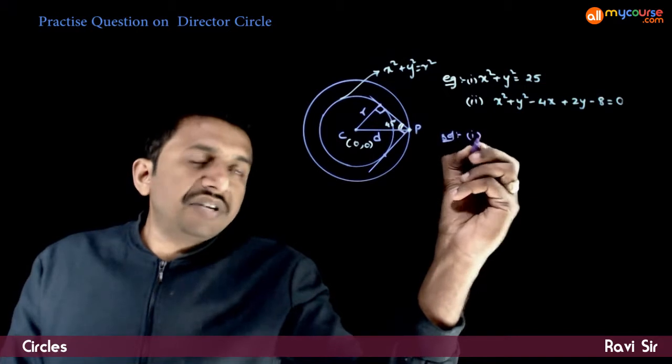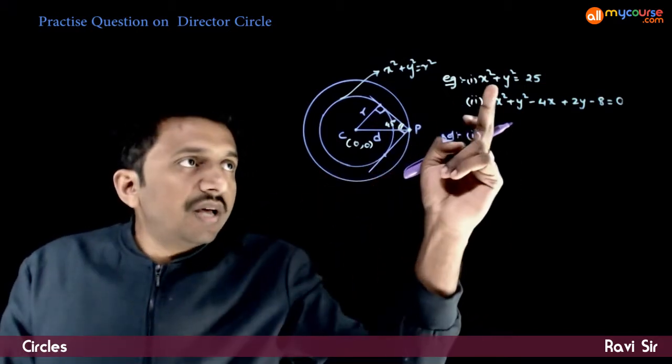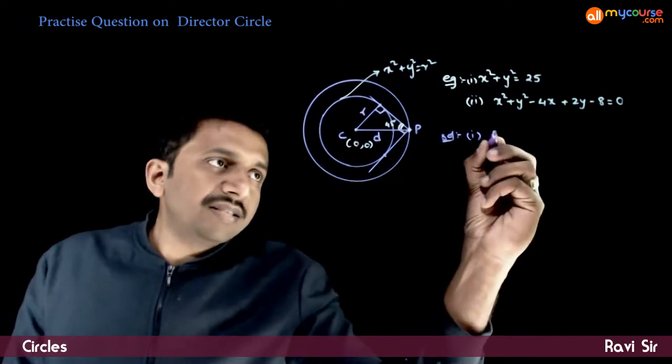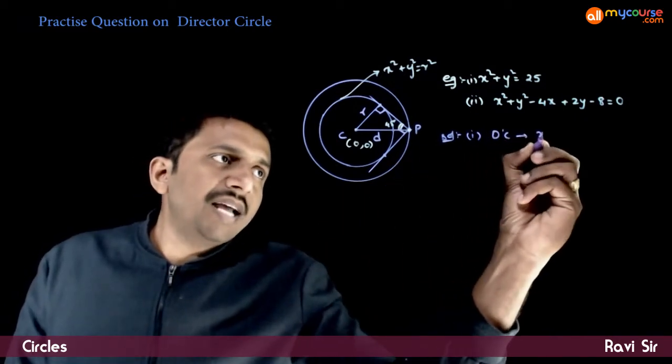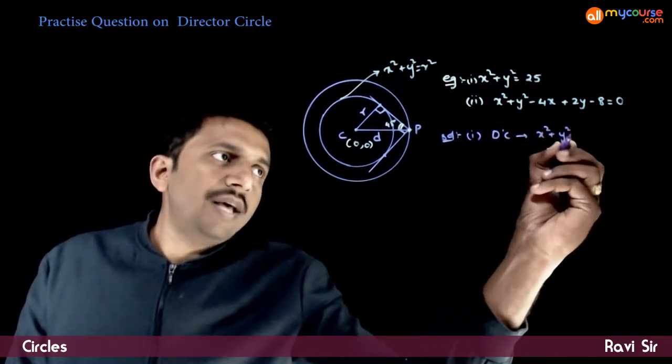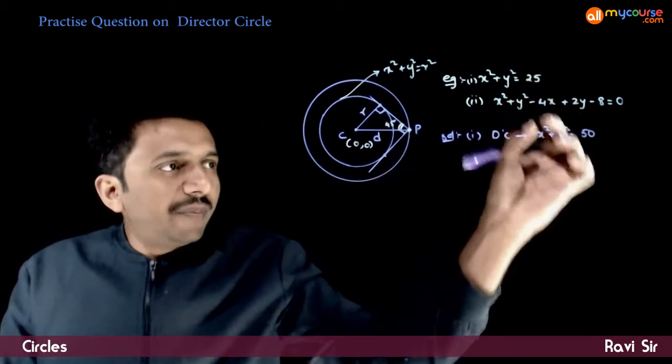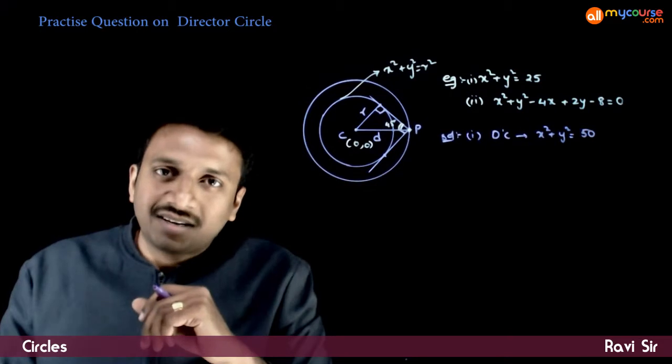So, the first question is very straightforward. x square plus y square is equal to r square. So, the director circle is nothing but x square plus y square is equal to 2r square. We just need to multiply this with 2 to get the director circle.